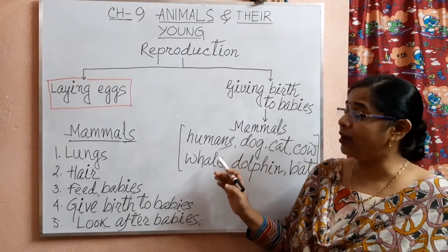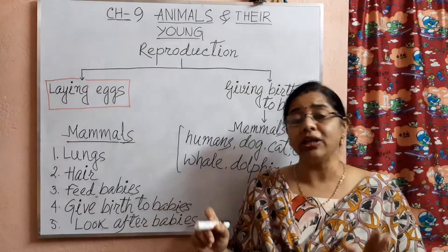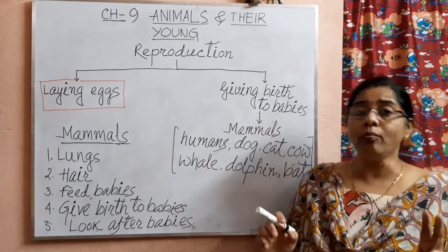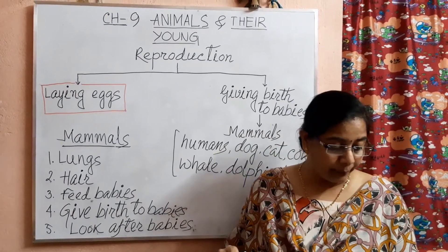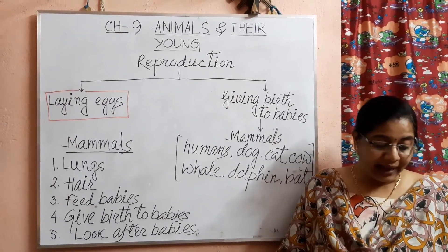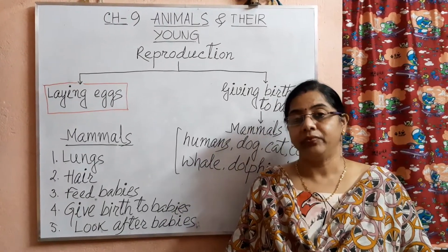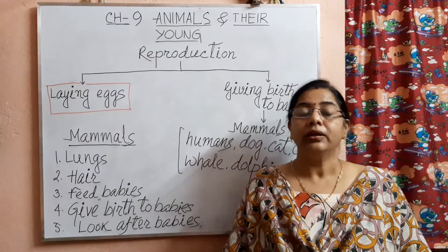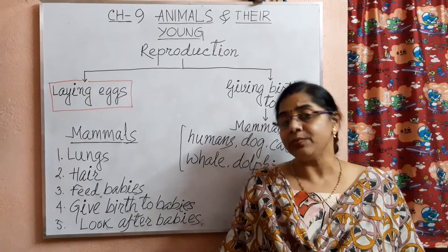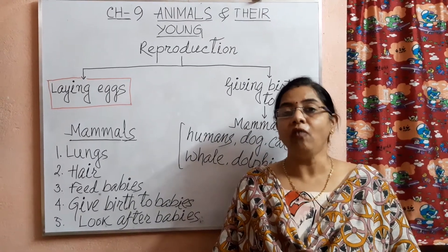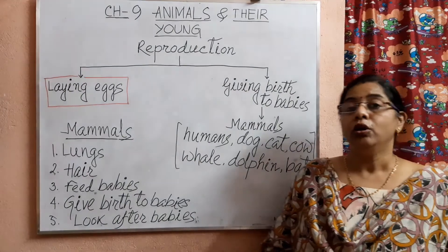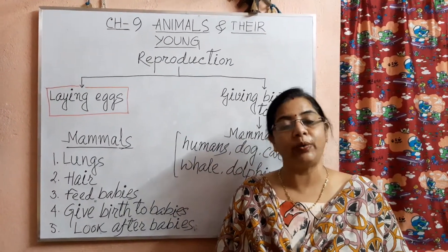I'd like to tell you one more thing — there are some exceptional cases. In your book on page 80, in the 'Did You Know' box, two mammals are given: one is the duck-billed platypus and another is the spiny anteater. These two mammals lay eggs; they do not give birth to babies directly. There are some exceptions in every field. Learn this part of your chapter properly. We will meet soon in our next video. Thank you.